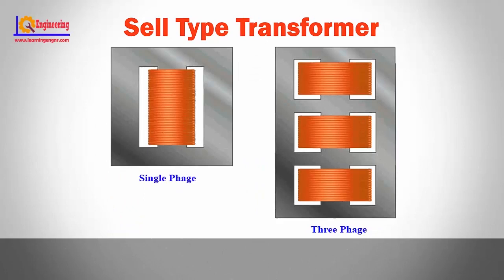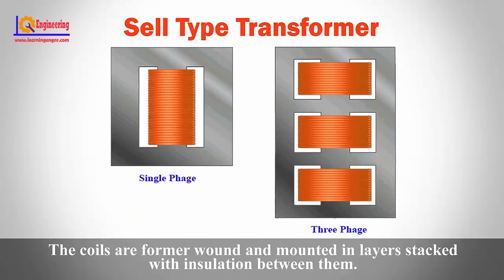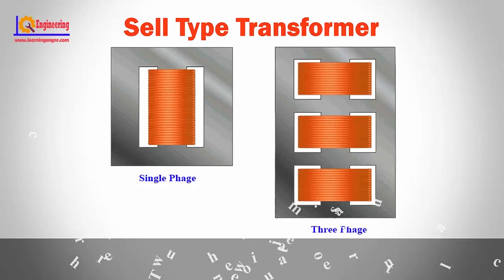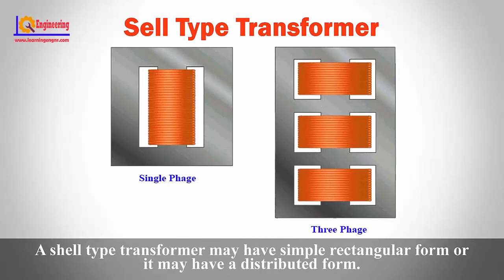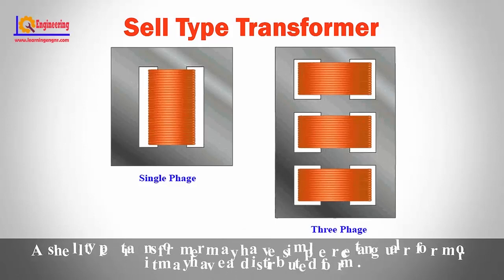Shell type transformer: The coils are wound and mounted in layers stacked with insulation between them. A shell type transformer may have a simple rectangular form or it may have a distributed form.